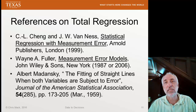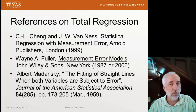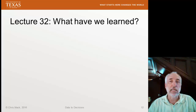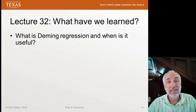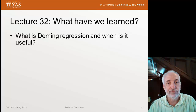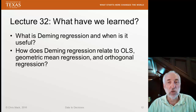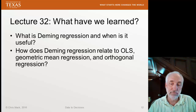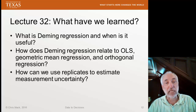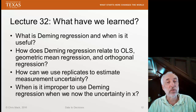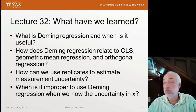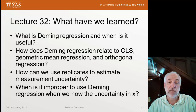If you're more interested in total regression, some good references are available — especially Fuller's Measurement Error Models book. This was lecture 32, our last PowerPoint lecture on total regression. The next lecture will use R to do total regression. Key takeaways: what Deming regression is and when it is useful; how it relates to OLS, geometric mean regression, and orthogonal regression; how to use replicates to estimate measurement uncertainty; and when it is improper to use Deming regression.